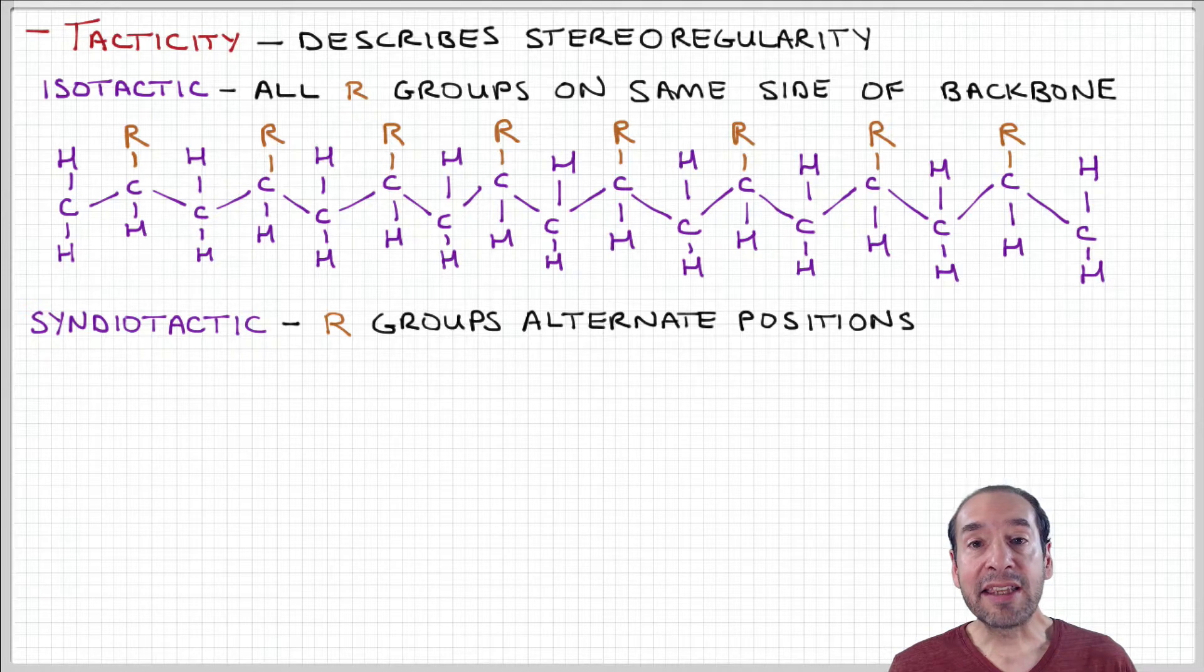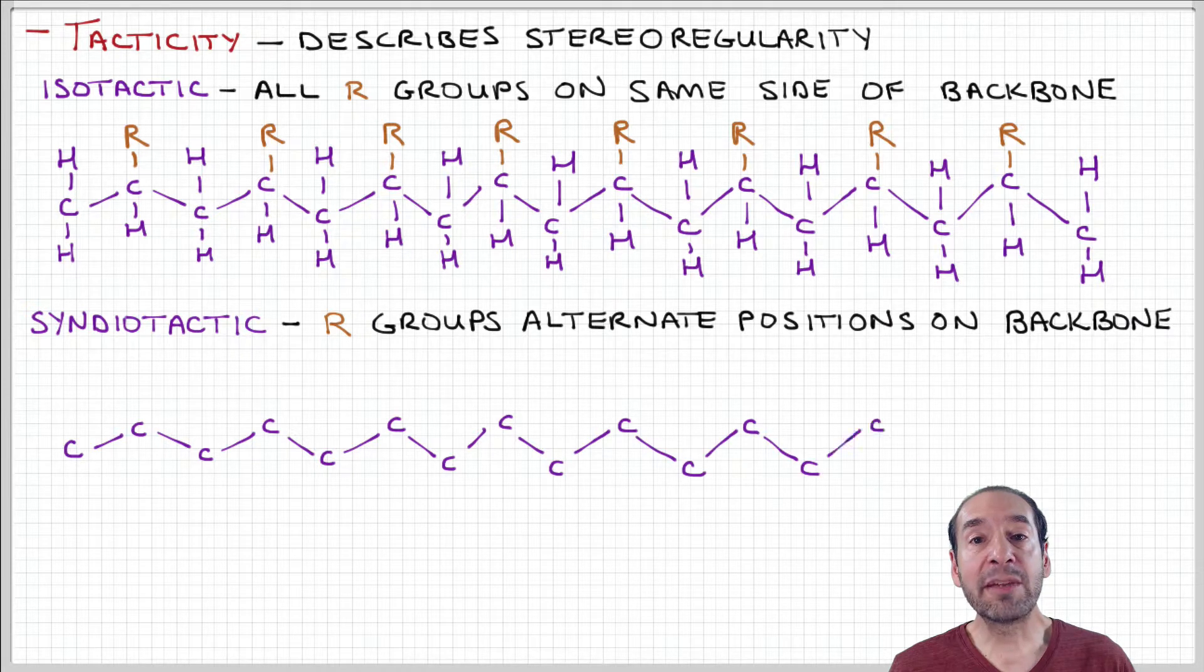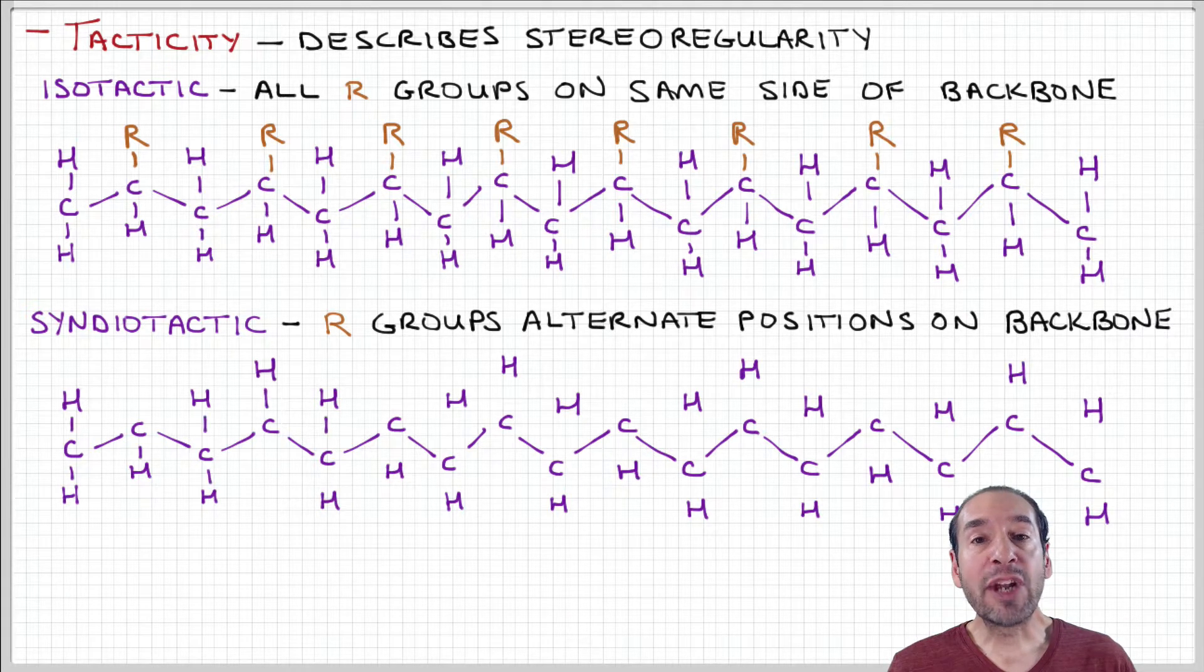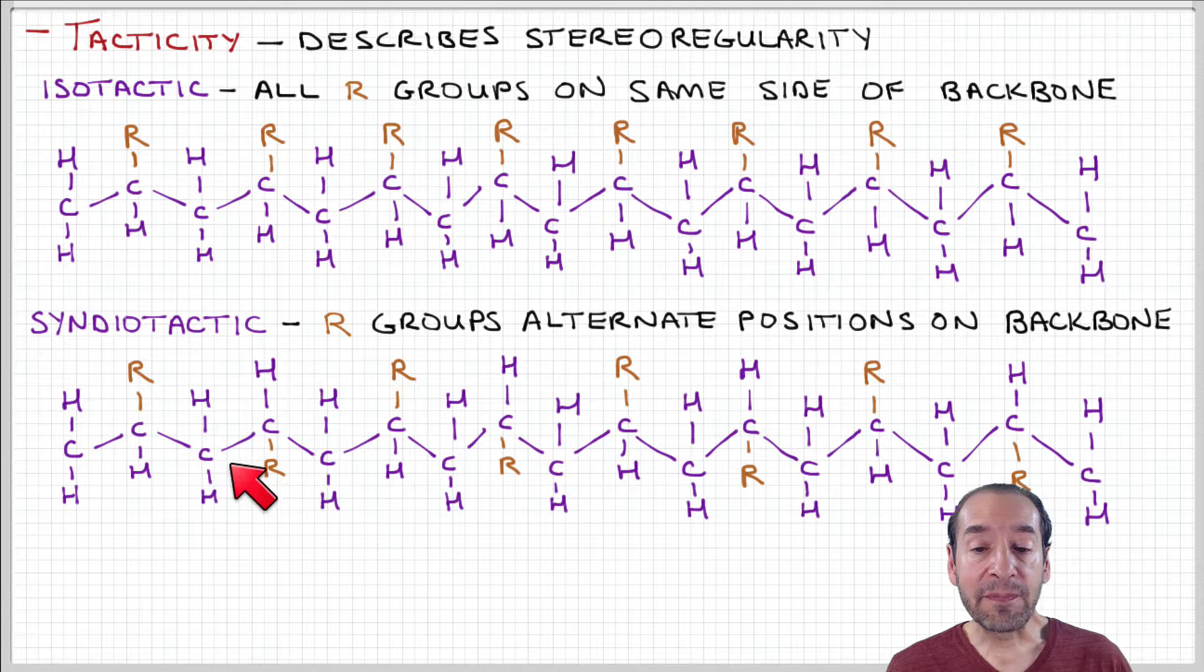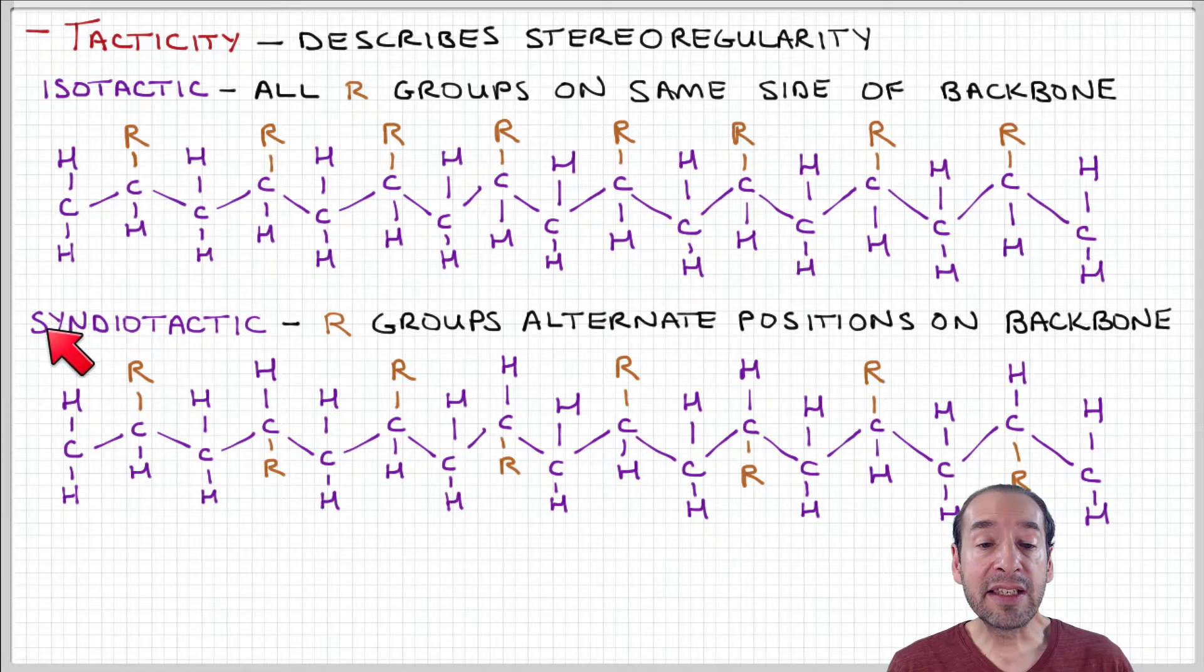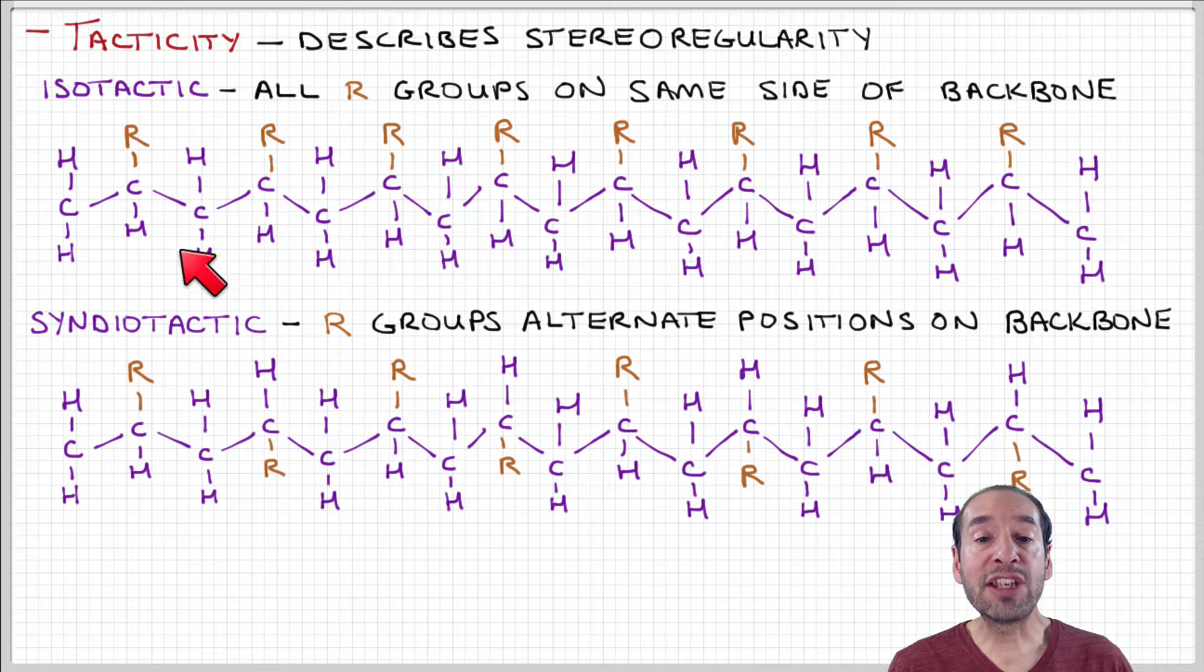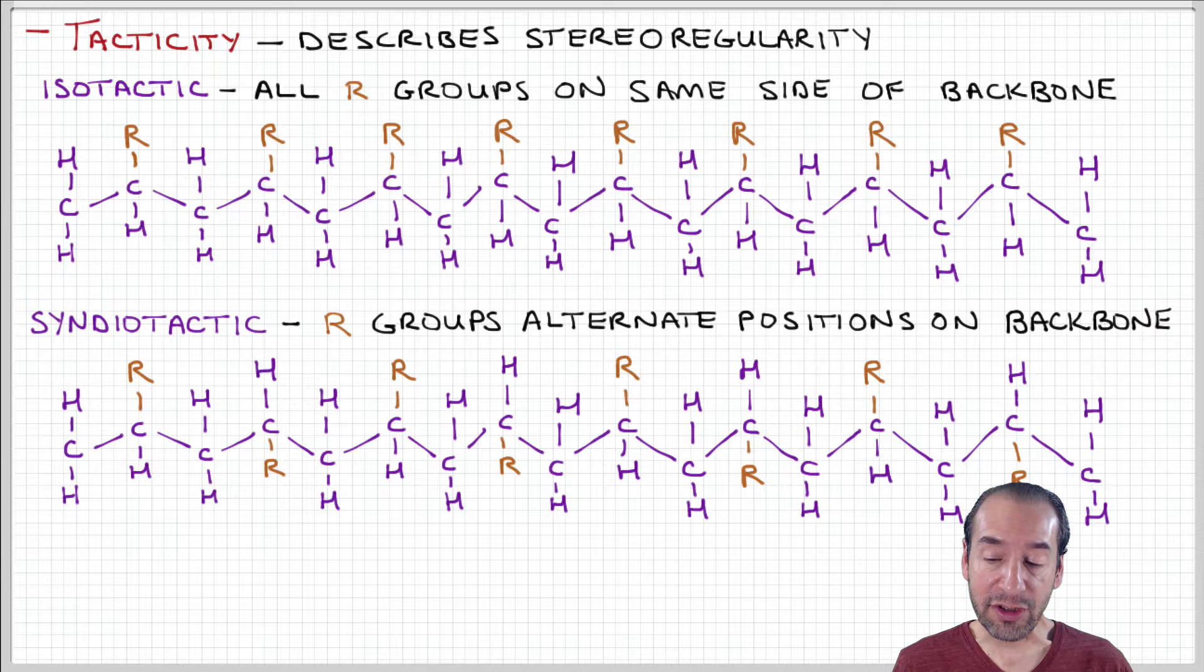Now, we already said that that doesn't have to be the case. We could imagine a situation where instead of being on the same side of the backbone, these side groups alternate from one side to the other. And if that's the case, it's still a regular arrangement in the sense that it repeats in a well-defined pattern, but this pattern is an alternating pattern. And so if this is the case, then this is said to be a syndiotactic arrangement. So again, in terms of regular arrangement of side groups along the polymer backbone, an isotactic arrangement has them all in the same location, a syndiotactic arrangement has them in alternating locations along the polymer backbone.